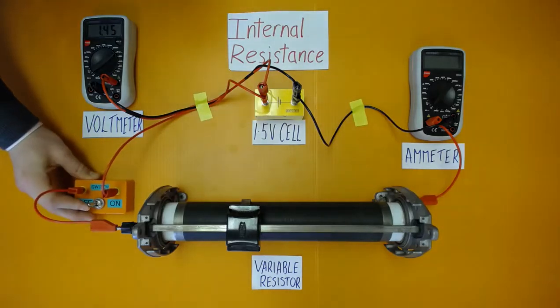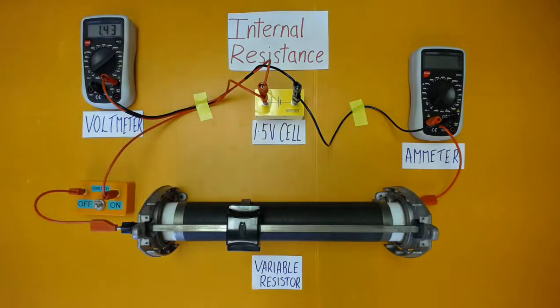Now we close the switch and we take a reading from the ammeter to be 0.09 amps. We also record the terminal potential difference from the voltmeter, and this is 1.42 volts. We will then gradually decrease the resistance using the variable resistor and note the measurements for the current and the terminal potential difference.